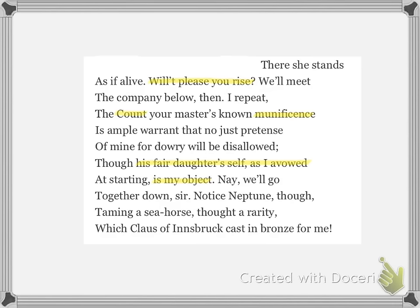That word 'object' tells you pretty much everything you need to know about the duke's attitude towards women. He doesn't want a wife to be anything other than an obedient, subservient possession that he can show off in the same way that he would a piece of art. It's interesting, therefore, to note the final image of the poem — Neptune taming a seahorse — a figure whom the duke clearly identifies with, and which represents the claustrophobic tyranny that his new wife will surely be condemned to.